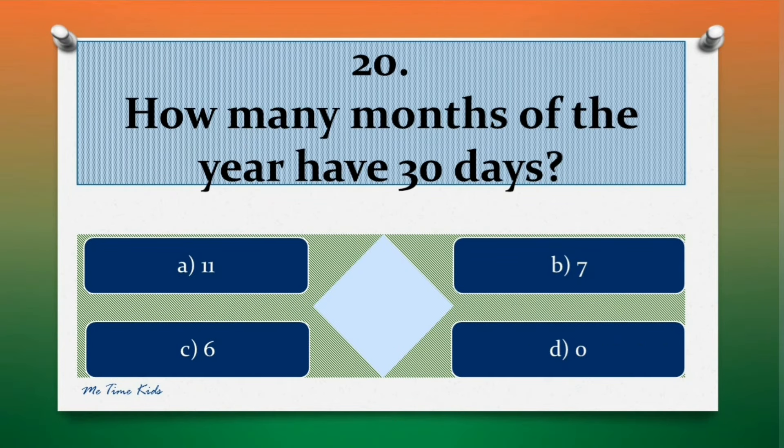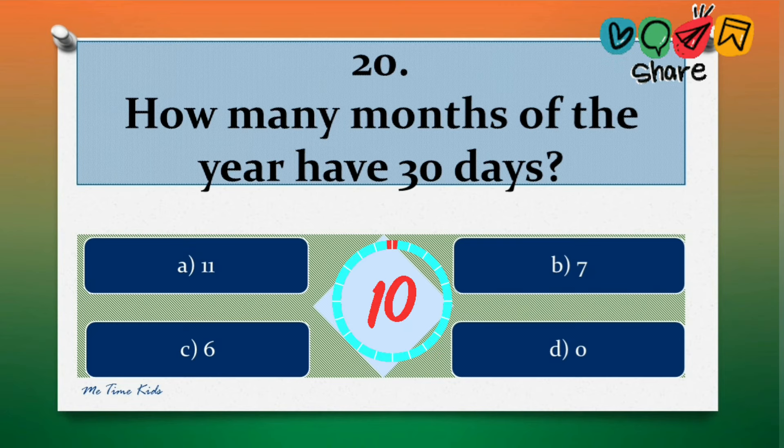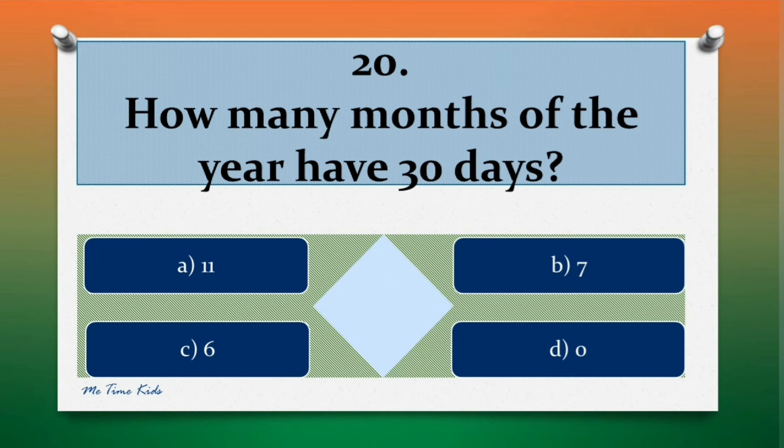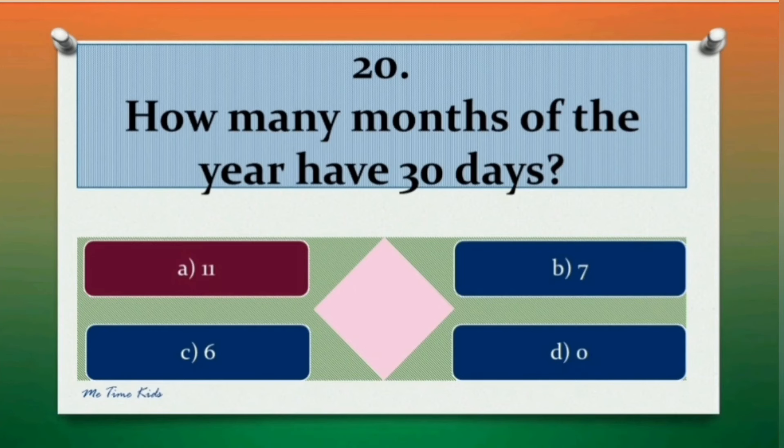Question 20. How many months of the year have 30 days? Options are: a. 11, b. 7, c. 6, d. 0. Correct answer is a. 11. All months except February has at least 30 days.